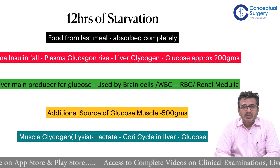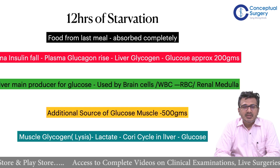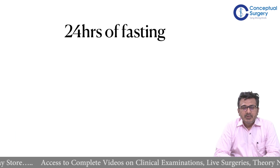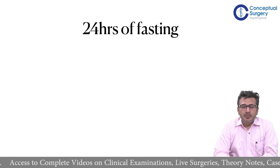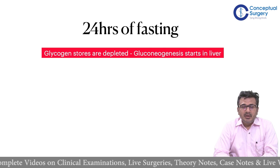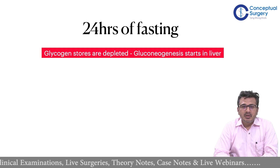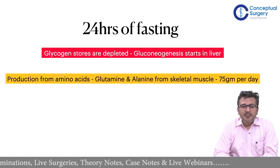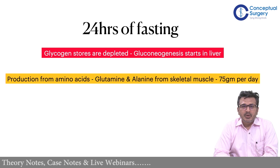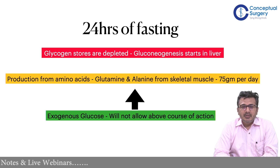So glucose comes from two sources: the breakdown of glycogen and from muscle. What happens if I stop eating for 24 hours and do a fast? The glycogen stores from the liver become depleted and there will be gluconeogenesis in the liver. The next step is mobilization of amino acids from muscles, providing a source of glucose production of approximately 75 grams per day. Providing exogenous glucose will prevent the above course of action — this does not happen when you give exogenous glucose during 24 hours of fasting.